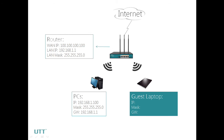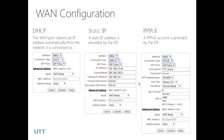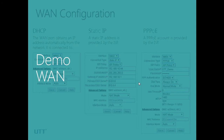You can refer to this topology. The first part is WAN. There are three types of WAN connections: DHCP, Static IP, and PPPoE. You can adjust them according to the ISP settings. Let's take a look at the demo.